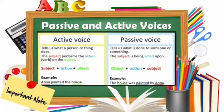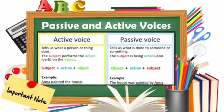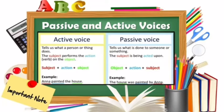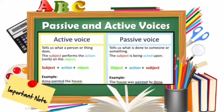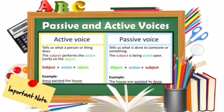While in the passive voice, it tells us what is done to someone or something. The subject is being acted upon. Our pattern is object plus action plus subject. Example: 'The house was painted by Anna.' House is the object, painted is the action, and Anna is the subject.